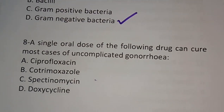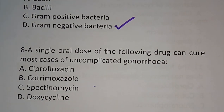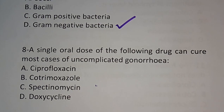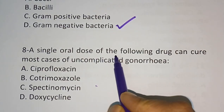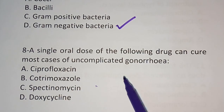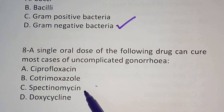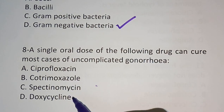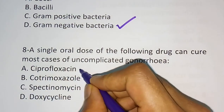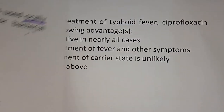Question eight: a single oral dose of the following drug can cure most cases of uncomplicated gonorrhea. Options are: ciprofloxacin, levofloxacin, spectinomycin, doxycycline. The correct answer is ciprofloxacin.